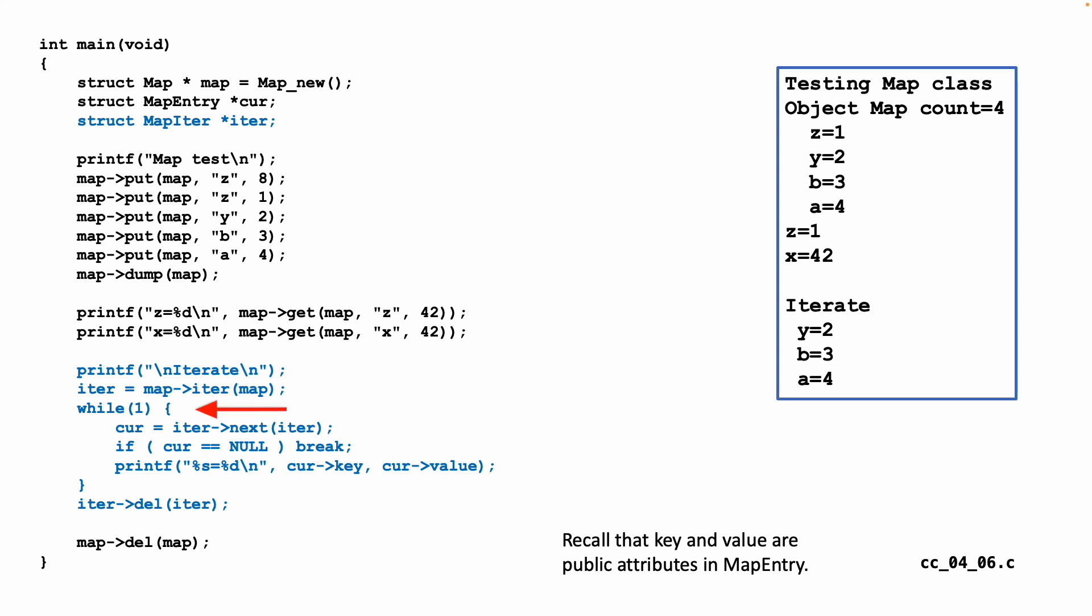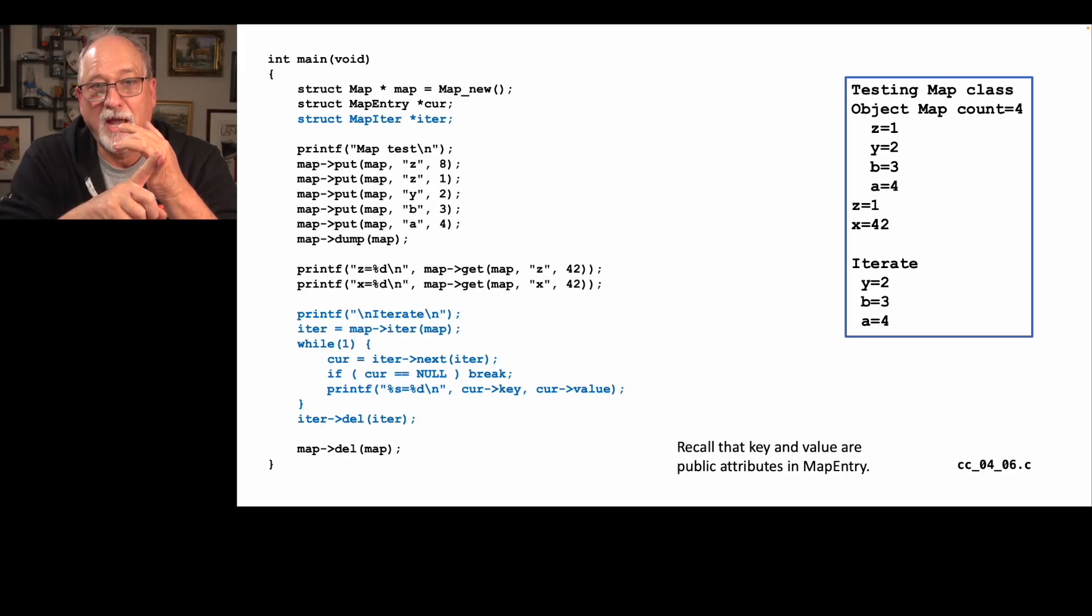And then we write a while loop, and we say, hey, iterator, give me the next thing. It is up to the iterator to start at the beginning, and then advance, and move down. And when we get null, we break. If not, we print key and value from the cur. Now cur is of type map entry. There's a map iter, iter next, and then cur is what we get back from iterator. So we get from iter, iter next, we get back a map entry.